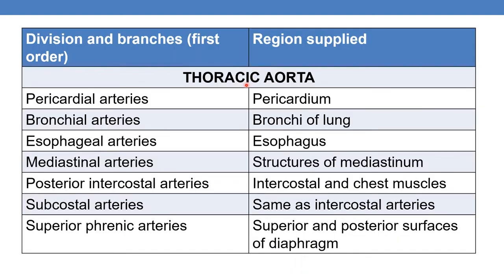Coming to the thoracic aorta — it is composed of pericardial arteries supplying the pericardium, bronchial arteries supplying the bronchi of the lung, esophageal arteries supplying the esophagus, mediastinal arteries supplying structures of the mediastinum, posterior intercostal arteries supplying intercostal and chest muscles, subcostal arteries, and superior phrenic arteries which supply blood to the superior and posterior surfaces of the diaphragm.